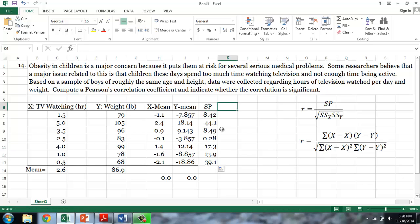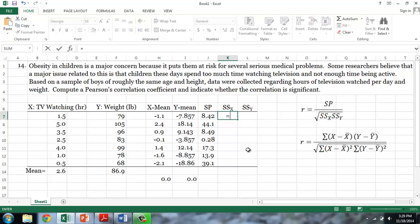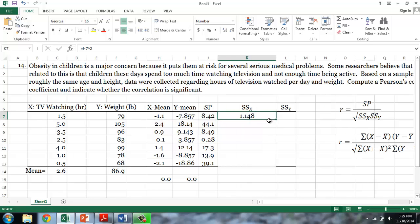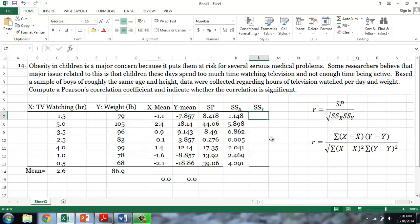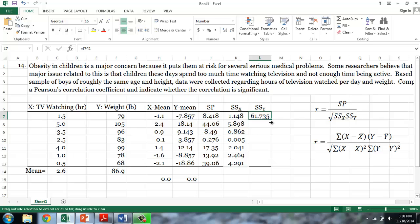Next, I'll calculate the squared deviations for x and y in order to calculate the denominator. For x, this is equal to our deviation score for x squared. And I'll copy this into the remaining cells. I will then do the same for y. The sum of squared deviations for y is equal to the deviation for y squared. And again, I'll copy that into the remaining cells.